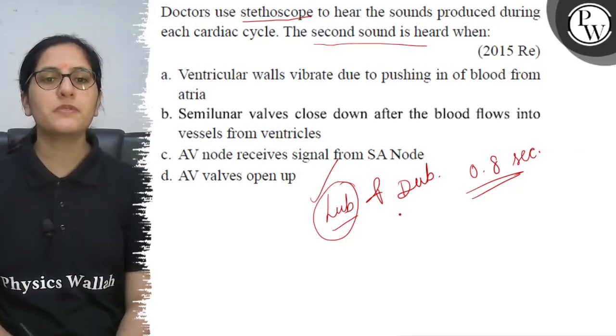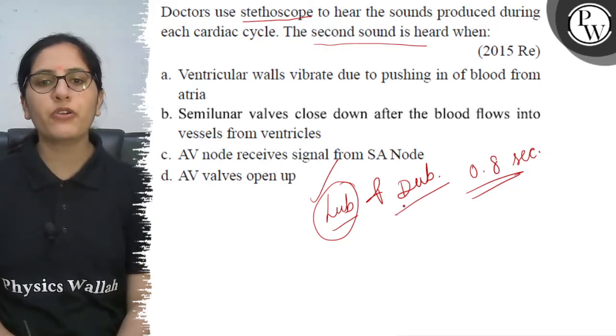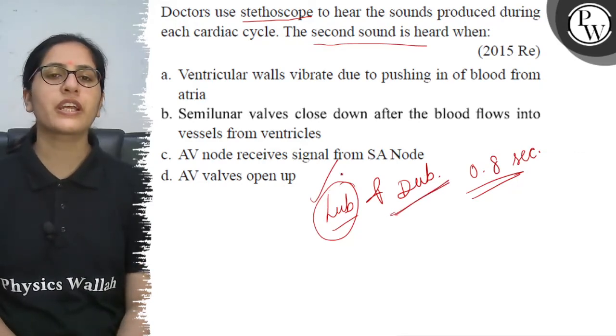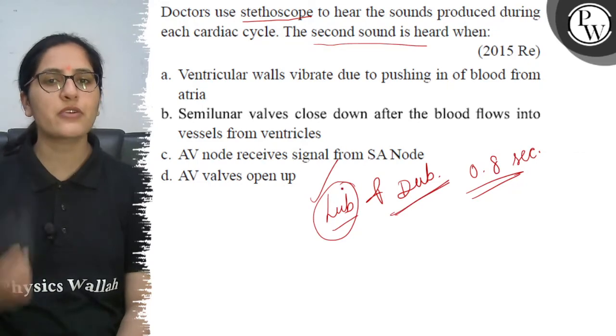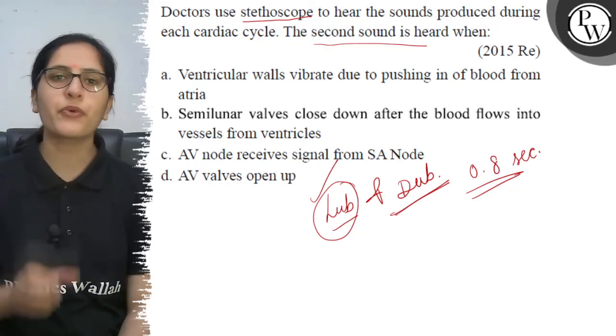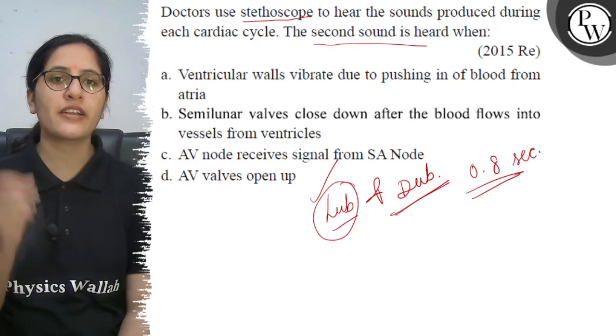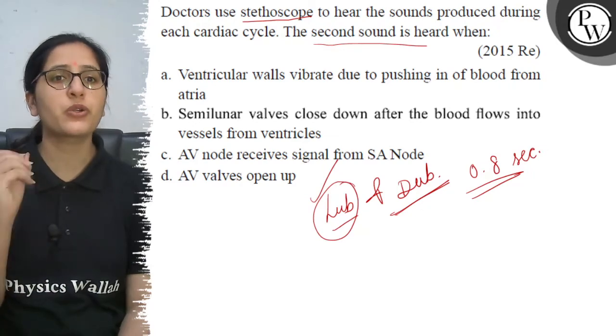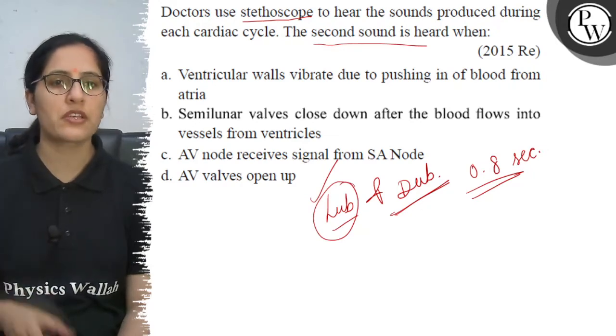But when the semilunar valves close, the second heart sound is produced — that is the 'dub'. That is because of the closure of the semilunar valves.